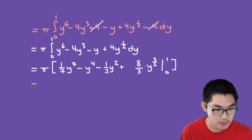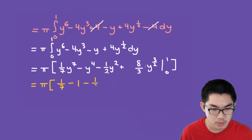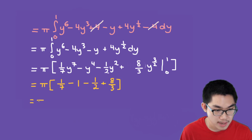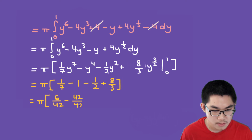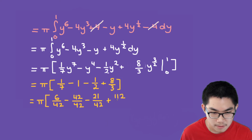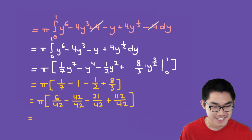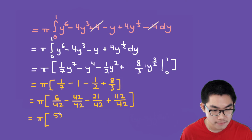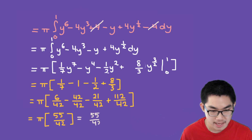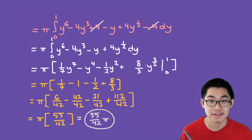So this is equal to π times (1/7 minus 1 minus 1/2 plus 8/3) after substituting the boundary values. Converting to a common denominator of 42: 6/42 minus 42/42 minus 21/42 plus 112/42. And 6 minus 42 minus 21 plus 112 equals 55, so the answer is 55/42 π. This is the volume of our solid of revolution.